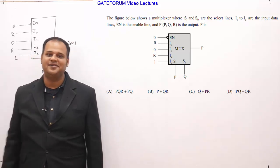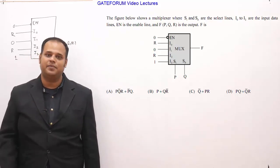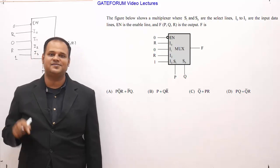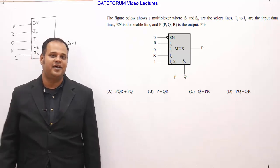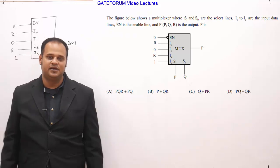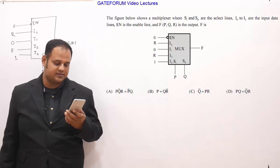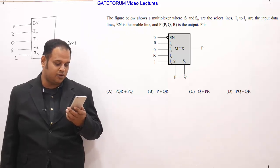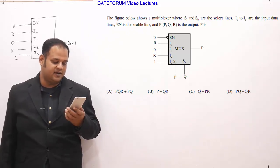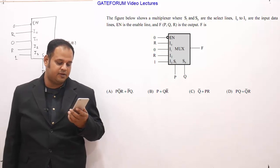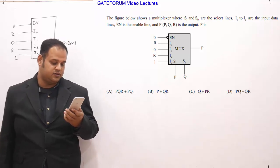This is one more question asked in GATE 2020 in the EC paper. This is from digital subjects, from the combinational circuit chapter, and from the multiplexer concept. The given question is: the figure below shows a multiplexer where S1 and S0 are the select lines, I0 to I3 are the input data lines, EN is the enable line, and F is the output. Then F is?